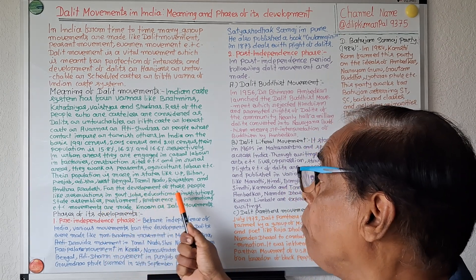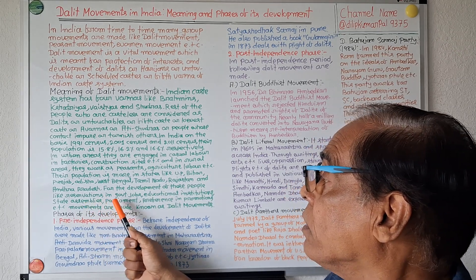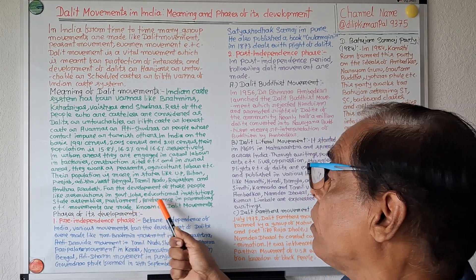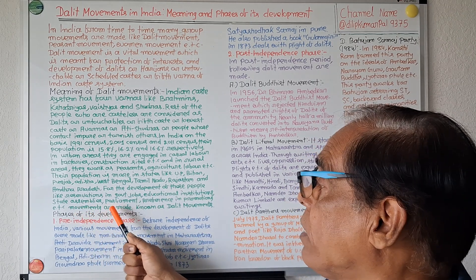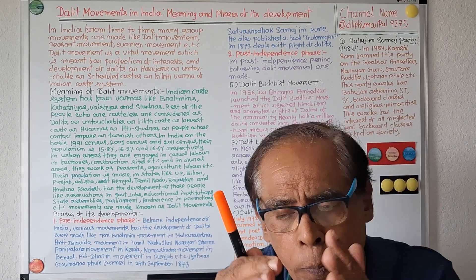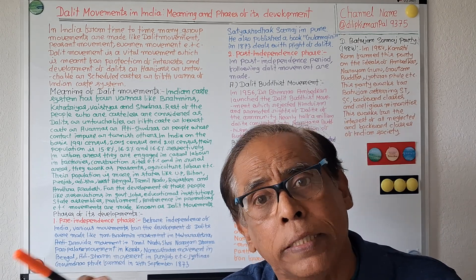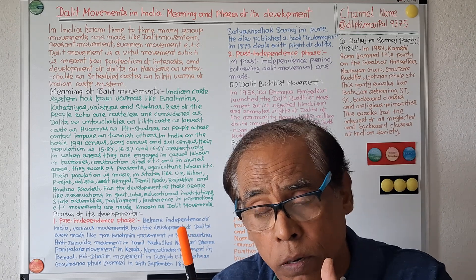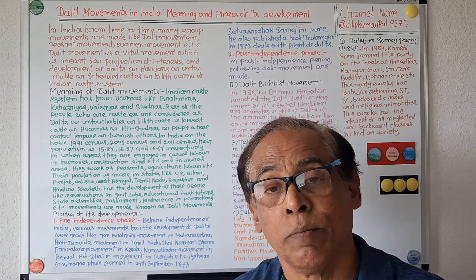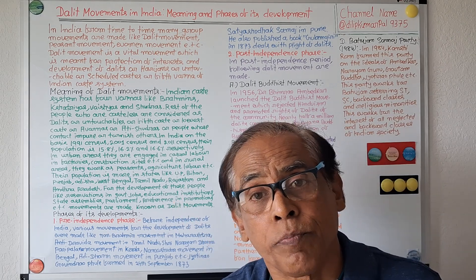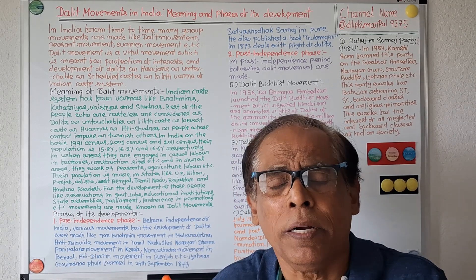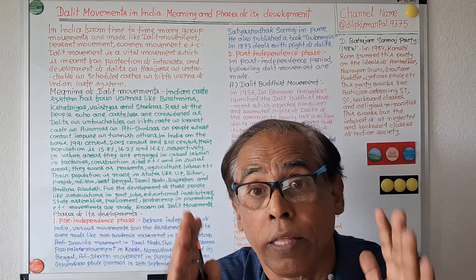For the development of these people, movements are made for reservation in government jobs, reservation in educational institutions, reservation in state assemblies, reservation in parliament, and preference in promotion. These movements are known as Dalit movements in India. So, for their development, from time to time, various movements are found — these are known as the Dalit movements in India.